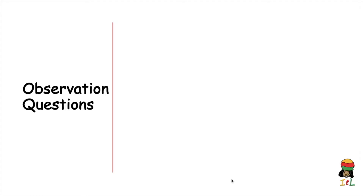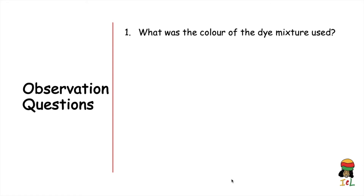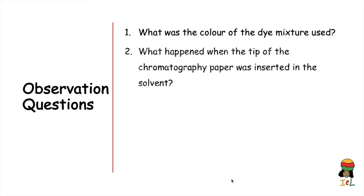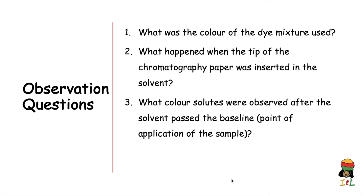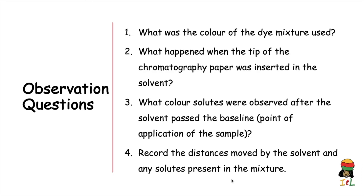Once we have made our observations, we should have the answers to the following questions. Question one: what was the color of the dye mixture used? Question two: what happened when the tip of the chromatography paper was inserted in the solvent? Three: what color solutes or pigments were observed after the solvent passed the baseline, that is the point where the sample was applied? And four: record the distances moved by the solvent and any solutes present in the mixture.